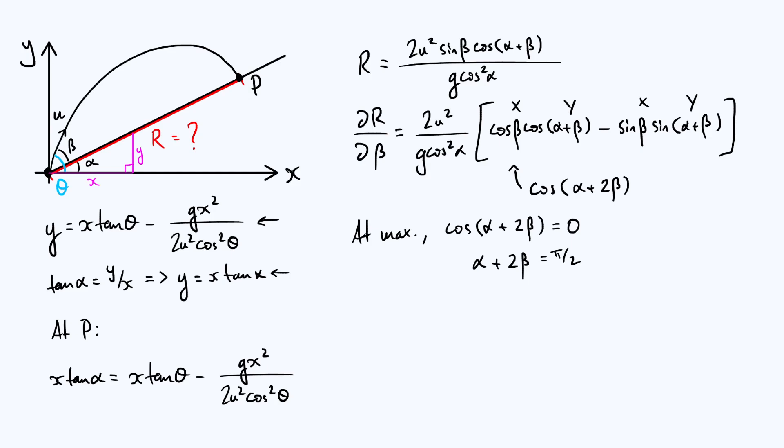So we just care about this first solution. Remember we're considering alpha to be fixed for a particular problem, so we really are interested in making beta the subject of this, and that rearranges straightforwardly to beta is pi over 4 minus alpha over 2. Again you can see as soon as you set alpha equals zero you recover the well-known result for the range on horizontal ground that you have to launch it at an angle of pi over 4, which is 45 degrees.